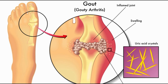To naturally address gout, you should avoid consuming alcohol and eating animal foods high in purines. Also, drink plenty of water a day to stay properly hydrated as well as to help flush uric acid out of the body. Drinking a gallon of spring water throughout the day helps a lot.